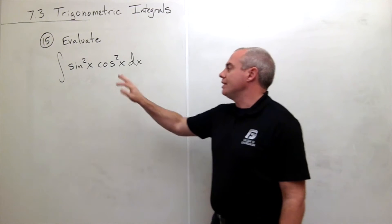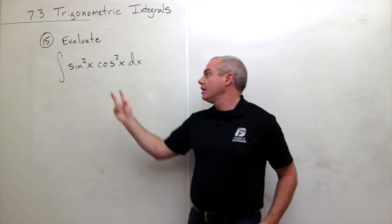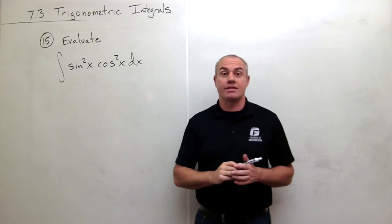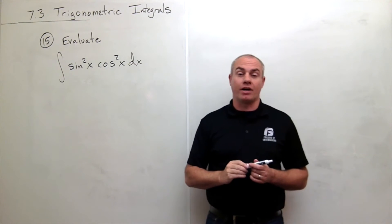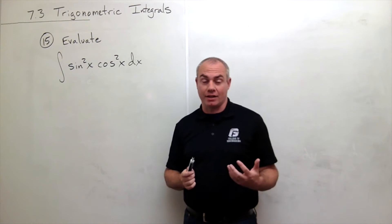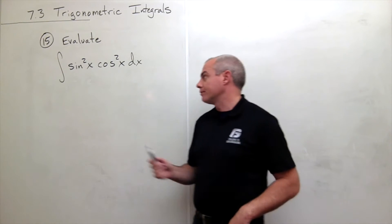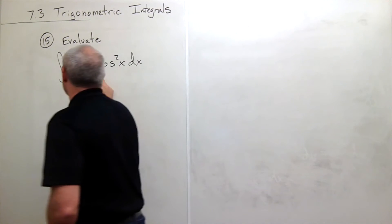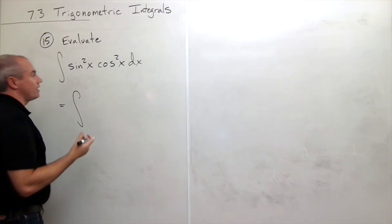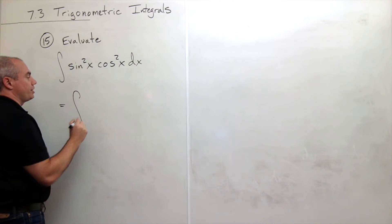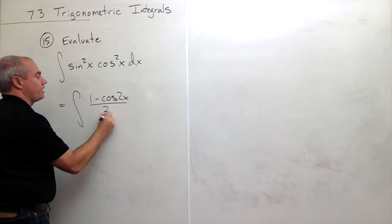In this problem I have a sine of x raised to an even power and I have a cosine of x that's also raised to an even power. Since they're both raised to an even power, I need to use half angle identities to simplify this integral. So I'm going to replace sine squared of x by its half angle identity form, which is 1 minus cosine of 2x divided by 2.